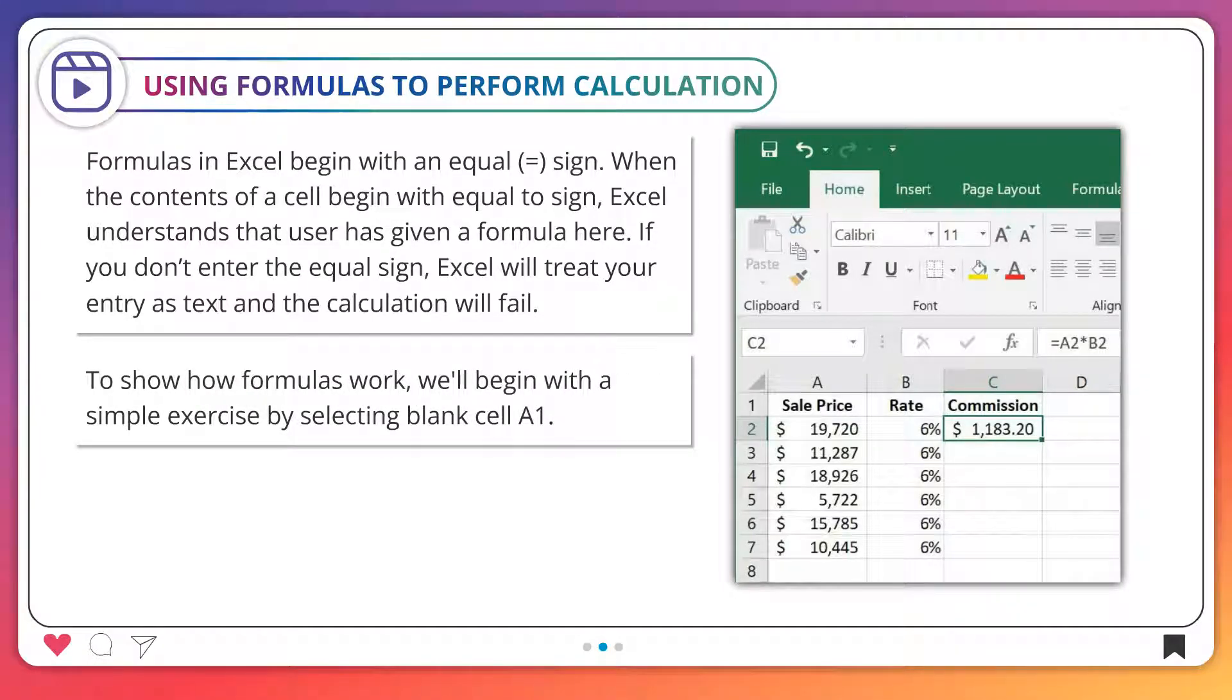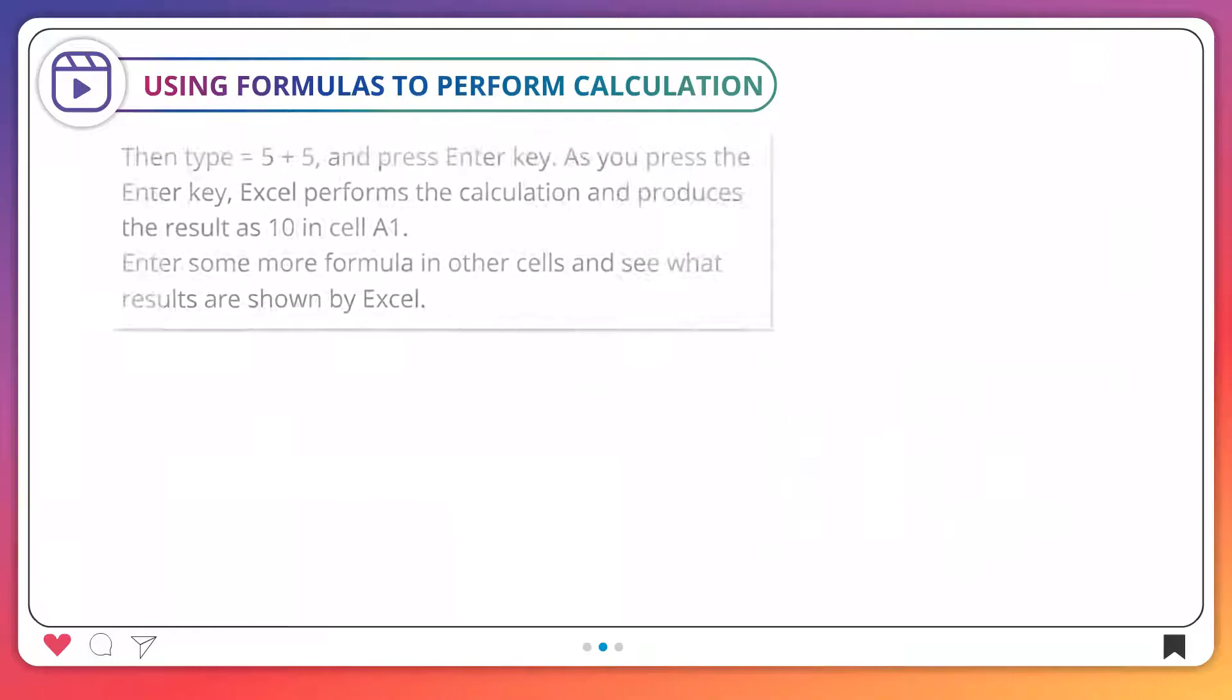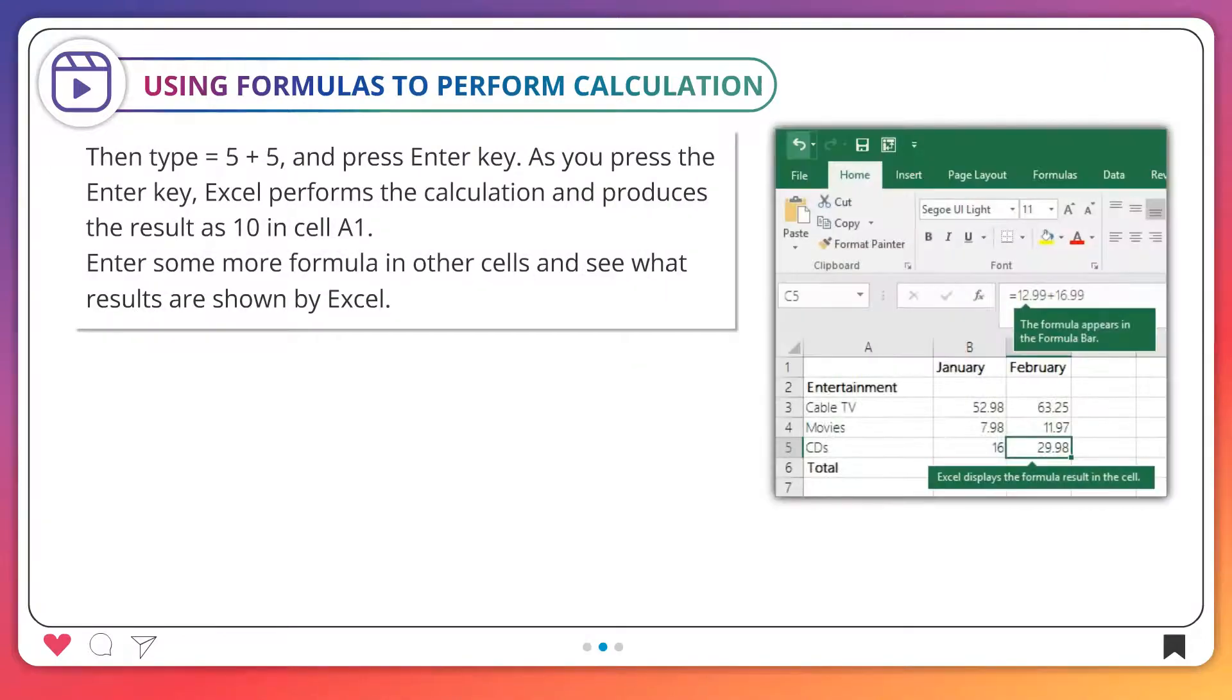To show how formulas work, we'll begin with a simple exercise by selecting blank cell A1. Then type equal to 5 plus 5 and press Enter key. As you press the Enter key, Excel performs the calculation and produces the result as 10 in cell A1.